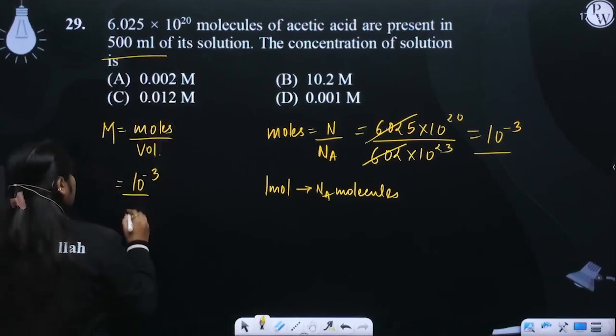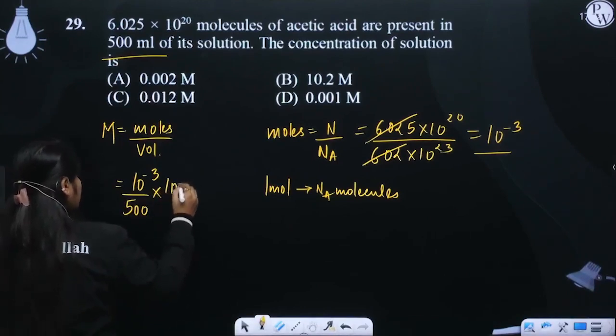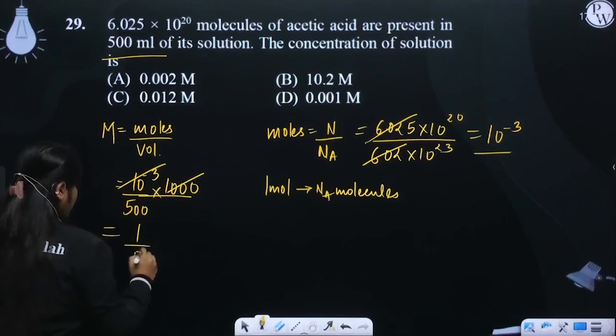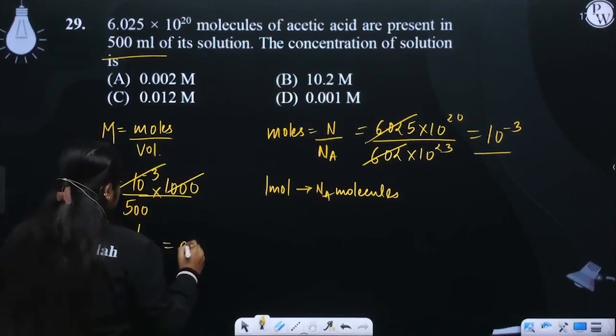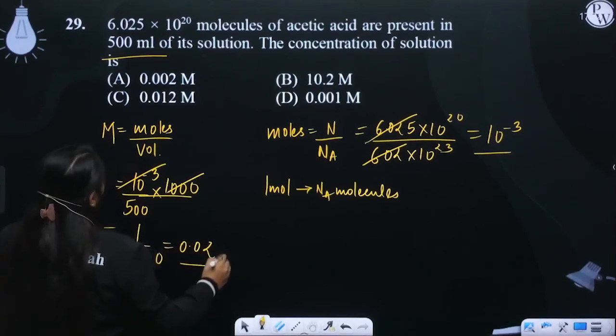Volume is 500 ml. In ml, we need to change it in liter. This is gone, this is gone. 1 upon 500. That means 0.02 molar.